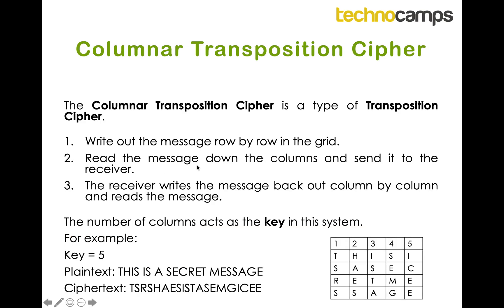This video is going to cover another type of transposition cipher called a columnar transposition cipher. The way it works is we write out our message row by row in a grid, and then we read the message down the columns. Reading column by column then becomes our cipher text, which we send to our receiver.